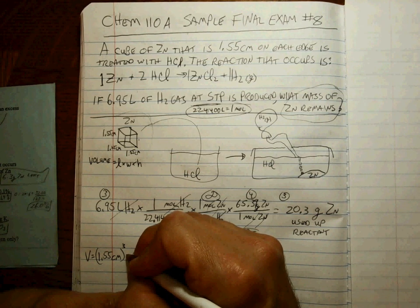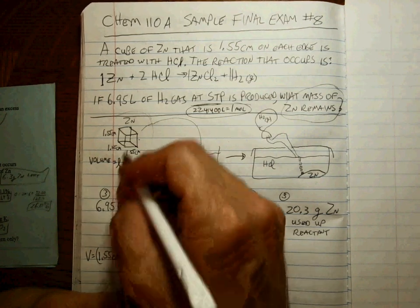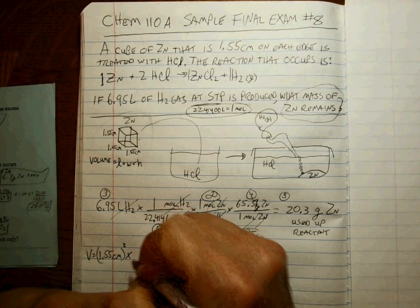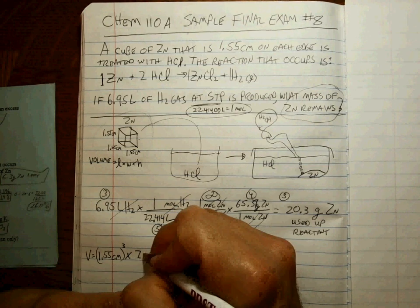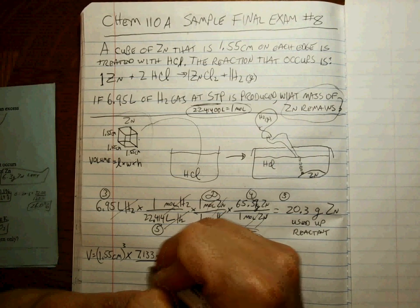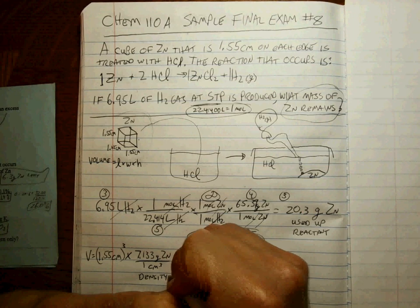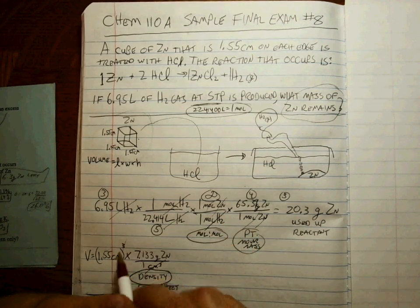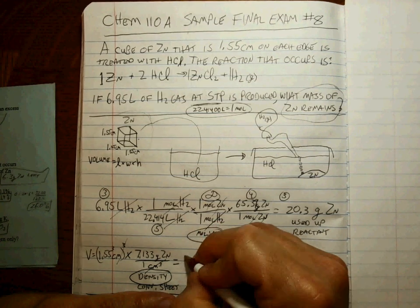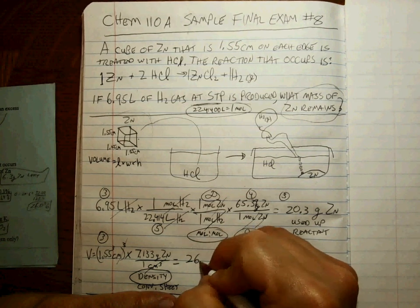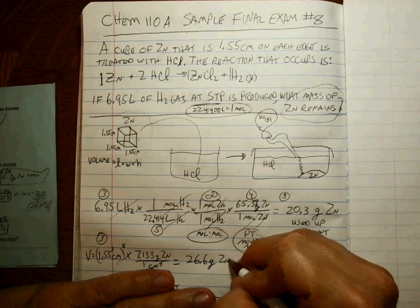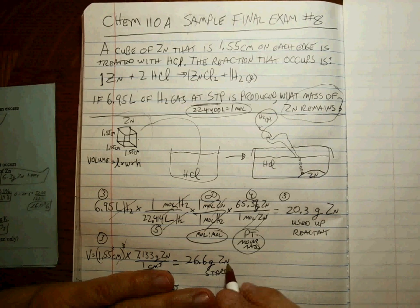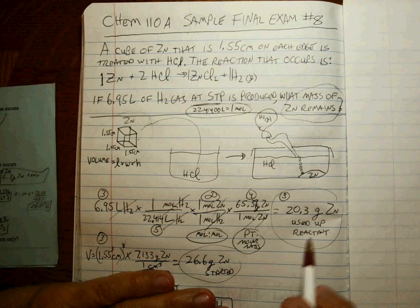Once we get that cubic centimeters volume of zinc — zinc is a solid — we need the density: 7.133 grams of zinc for every 1 cubic centimeter, from your conversion sheet. The cubic centimeters cancel. Make sure you cube both the 1.55 and the centimeters unit. You get a value of 26.6 grams to three sig figs, and that's the zinc you started with initially.